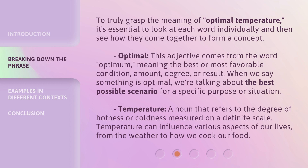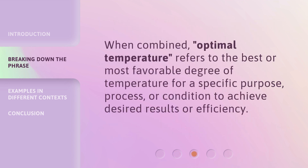Temperature — a noun that refers to the degree of hotness or coldness measured on a definite scale. Temperature can influence various aspects of our lives, from the weather to how we cook our food. When combined, optimal temperature refers to the best or most favorable degree of temperature for a specific purpose, process, or condition to achieve desired results or efficiency.